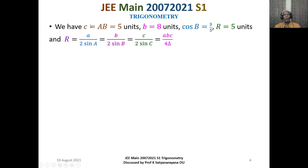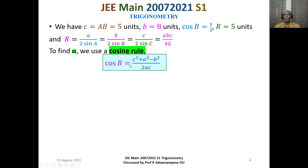Now knowing lowercase c, lowercase b, and cos B, we can find side a using the cosine rule. The cosine rule gives: cos B equals c squared plus a squared minus b squared, all divided by 2ac. Substituting: 3 by 5 equals 5 squared plus a squared minus 8 squared, divided by 2 times a times 5.